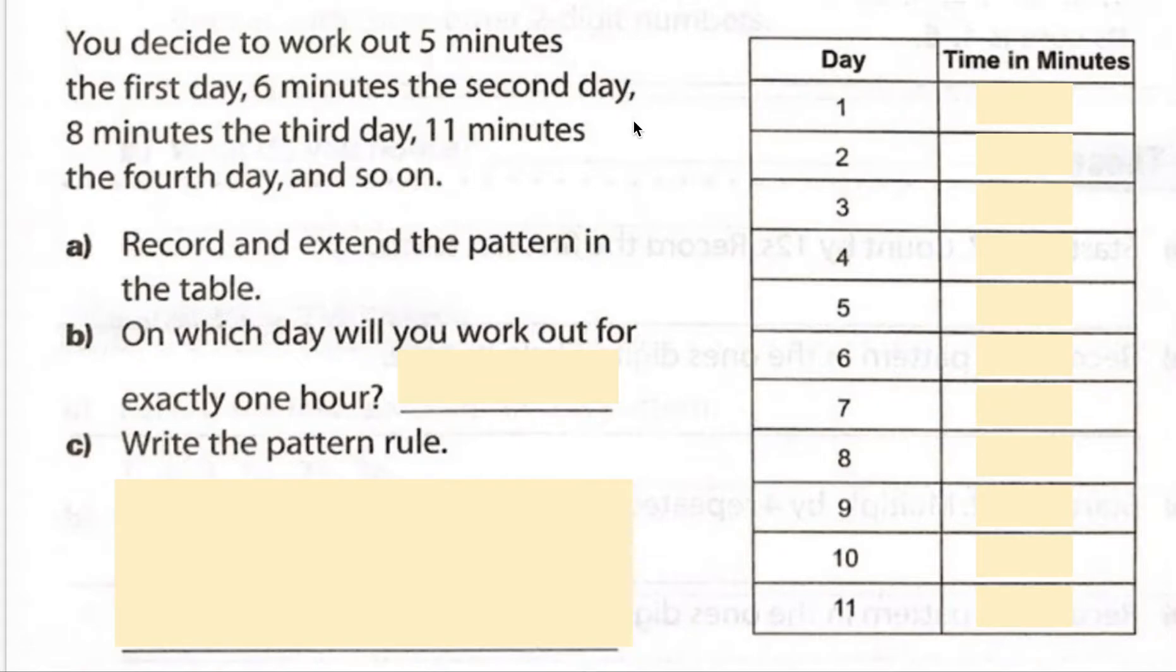So let's read this problem together. It says you decide to work out five minutes the first day, six minutes the second day, eight minutes the third day, eleven minutes the fourth day and so on. Step A says record and extend the pattern in the table. So we're going to go over to the table. You can see in the left hand column it has the day and has days one to eleven. In the second column it says the time in minutes, and that's how many minutes we're going to be working out.